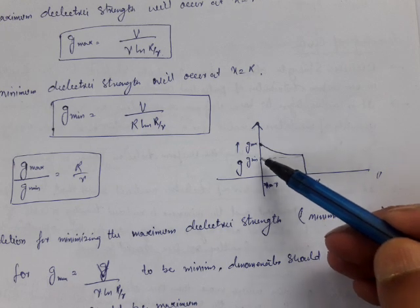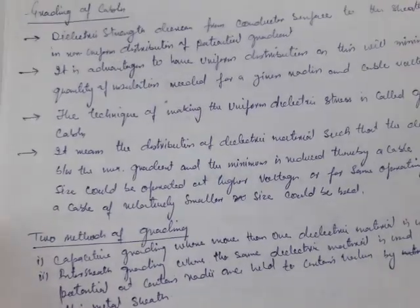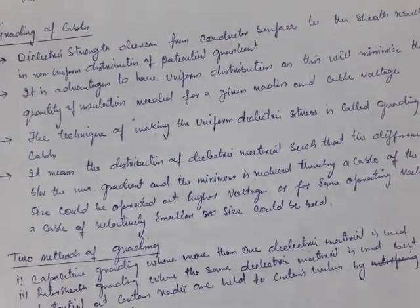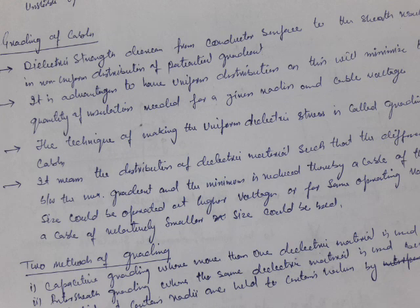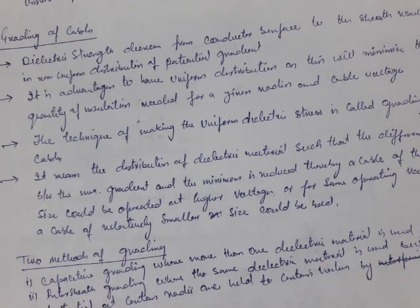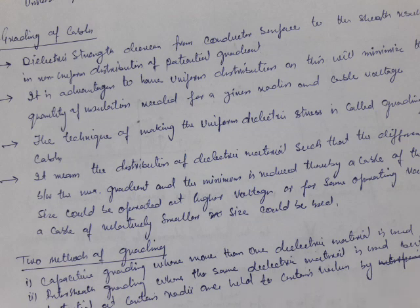By minimizing the difference between G_max and G_min, and bringing G_max close to G_min, the same cable can be used at a higher operating voltage. Alternatively, for the same operating voltage, we can use a smaller-sized cable for the same purpose — thereby reducing the cost of the cable. Thank you.